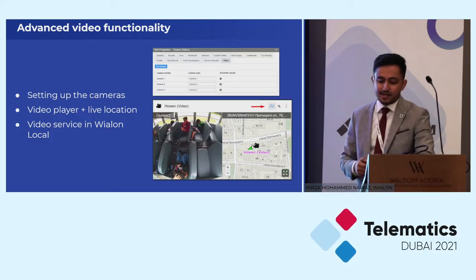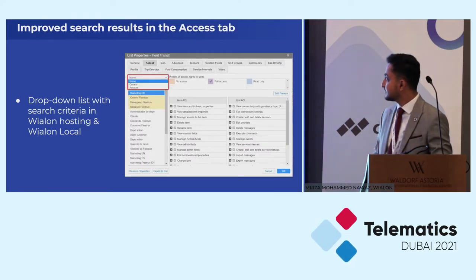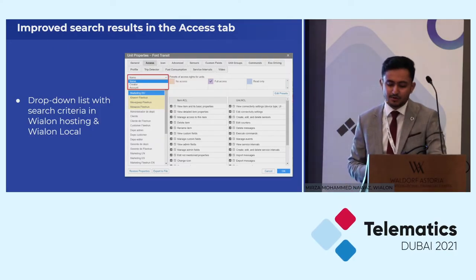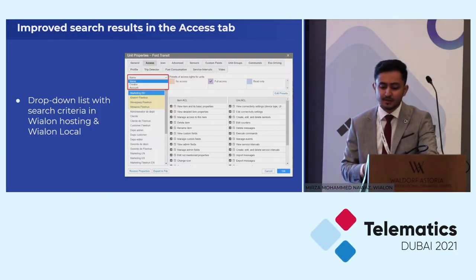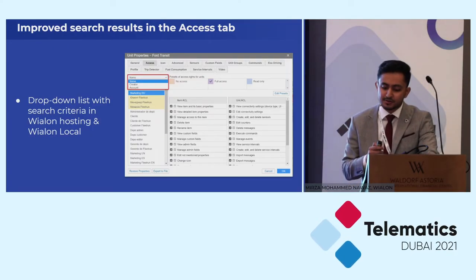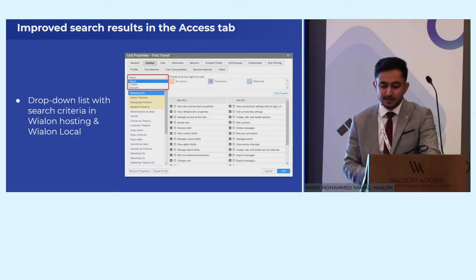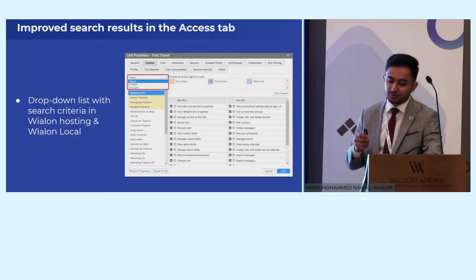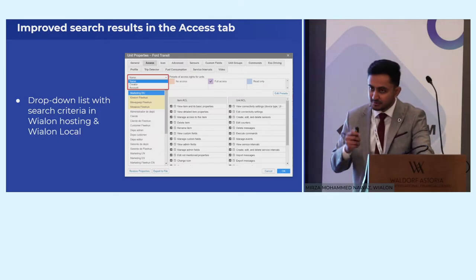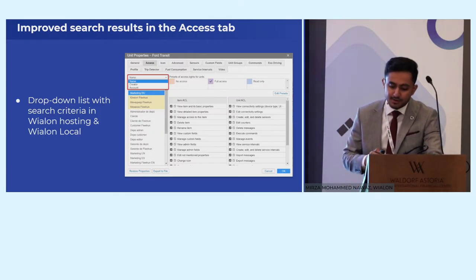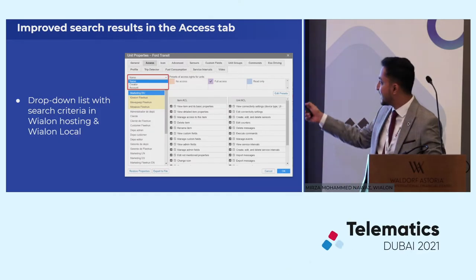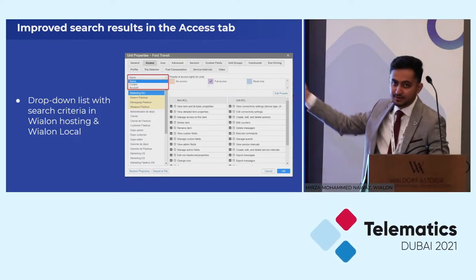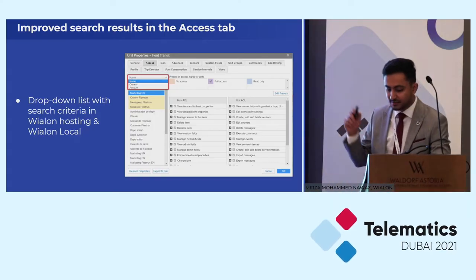Previously, in the access tab of the unit properties, a user could search only by the unit name. We wanted to make the search and its results as comprehensive as possible. Now a user can choose from a drop-down which parameter to apply — whether searching for an account or creator — and can search easily from there.